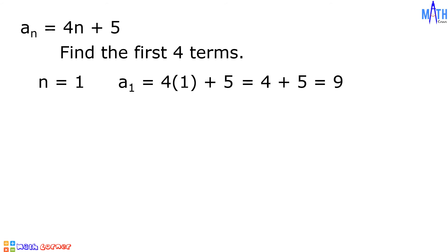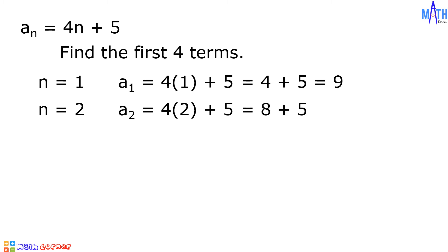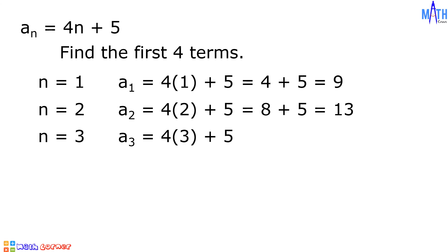To determine the second term, the value of n is equal to 2. A sub 2 is equal to 4 times 2 plus 5. 4 times 2 is equal to 8, and 8 plus 5 is equal to 13. To determine the third term, or a sub 3, the value of n is equal to 3. A sub 3 is equal to 4 times 3 plus 5. Since 4 times 3 is equal to 12, then 12 plus 5 is equal to 17.